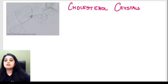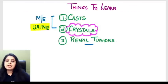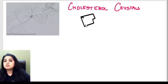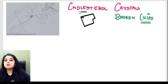The first crystal is the cholesterol crystal. These are totally unstained preparations from a urine sample viewed under a microscope. How do I identify a cholesterol crystal? It always looks like a broken chip — that's the classical description. Chips are obviously unhealthy and very rich in cholesterol, so broken chips equals cholesterol crystals. You can see those broken, notched ends in every crystal.